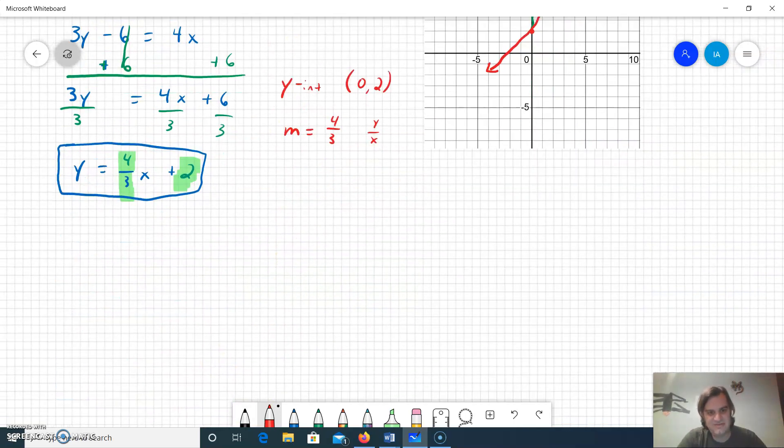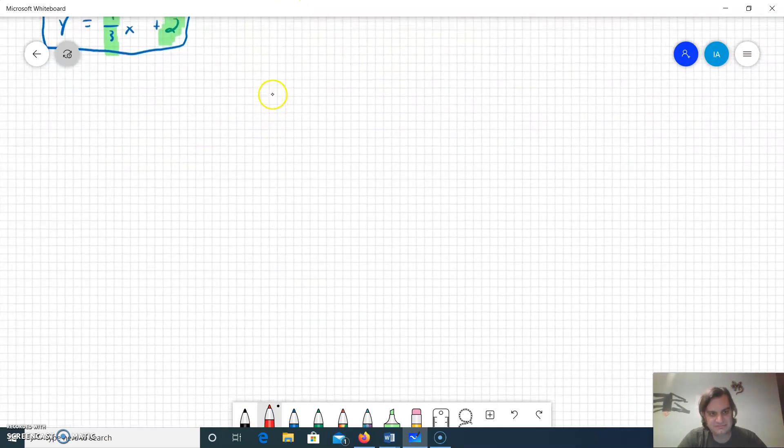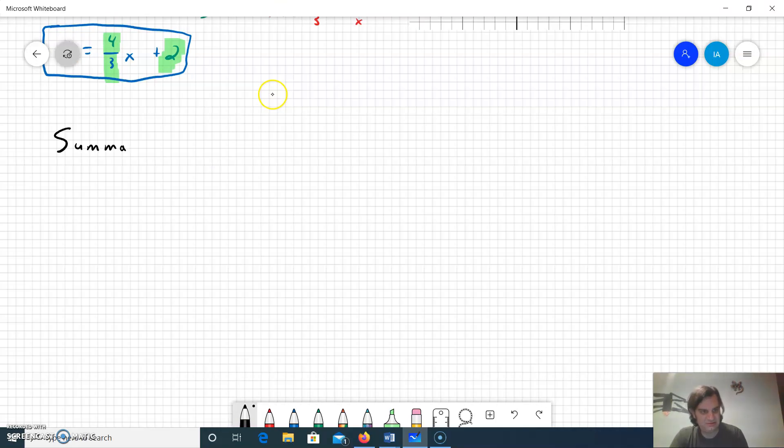We've learned the slope intercept form, which was y equals mx plus b. We've learned from that that the m is the slope and the b is the y intercept. So what we can do is we can put equations in slope intercept form.